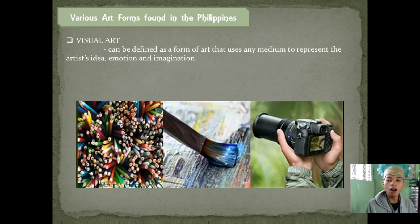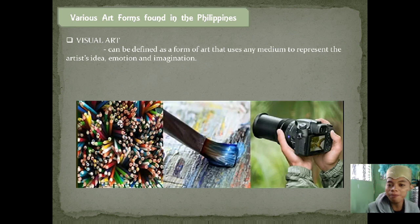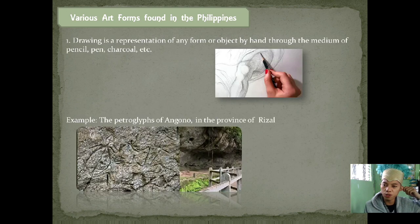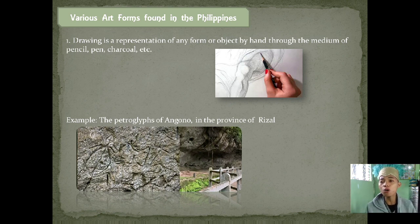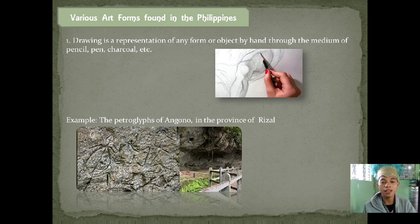Visual art can be defined as a form of art that uses any medium to represent the artist's idea, emotions, and imagination. First under visual art is drawing. Drawing is a representation of any art form or object by hand through the medium of pencil, pen, charcoal, and others. The sketch shown is an example of drawing.